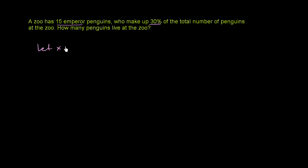So let's let x equal the total number of penguins who live at the zoo. They're telling us that 30% of that are the emperor penguins, which are 15. So if we take 30% of x, that is equal to 15.